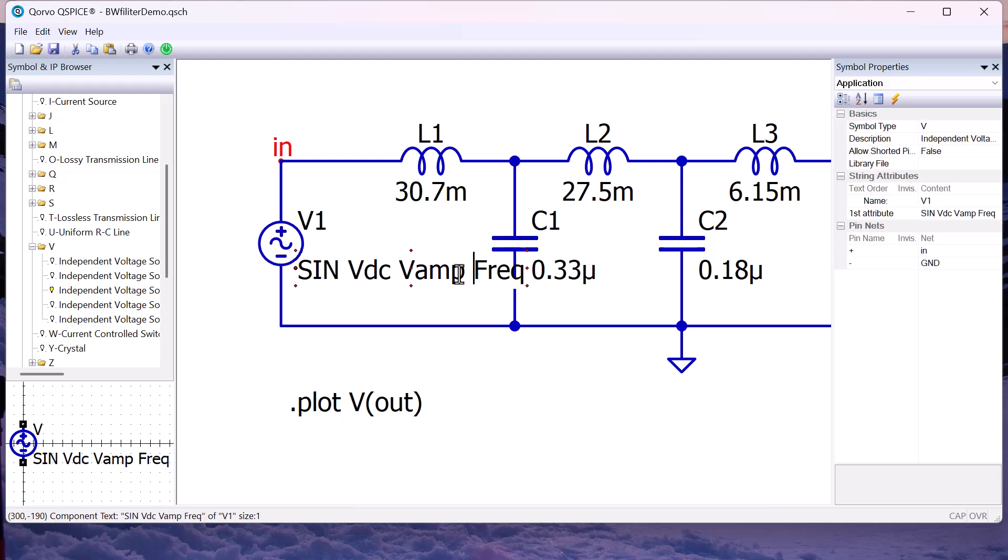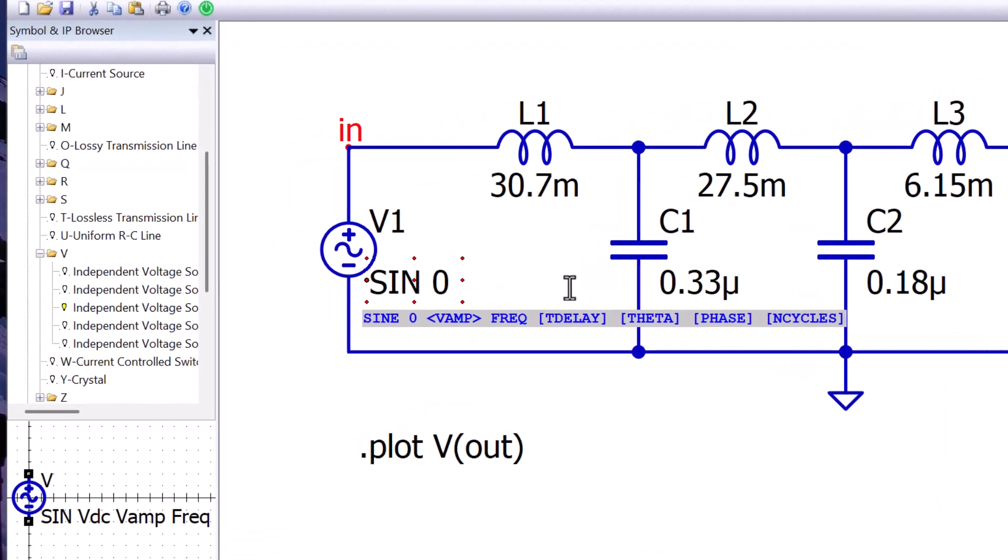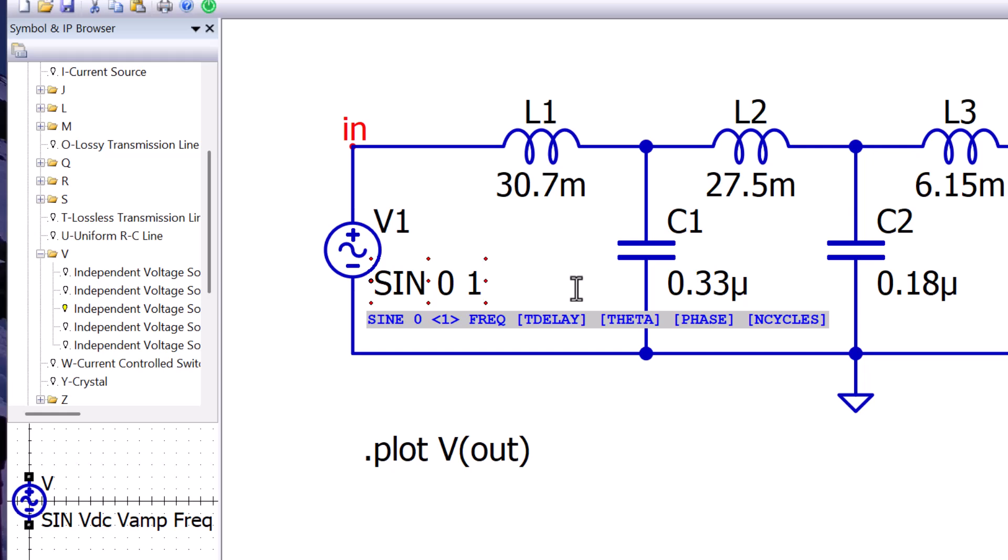Double click on the specification and type in 0 for DC value, 1 for amplitude, 1K for a frequency of 1 kHz. And for the small signal AC specification, type in AC equals 1.